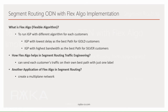Just to have a quick review: FlexAlgo allows us to run IGP with different algorithms and different constraints for different customers. For example, we run IGP for gold customers with least delay as the best path and with the constraint of ignoring all unreliable links. At the same time, we run IGP for silver customers with highest bandwidth as the best path and without any constraint. FlexAlgo helps in segment routing traffic engineering by sending each customer's traffic on their own best path with just one label, since that path is the best path in their own algorithm.